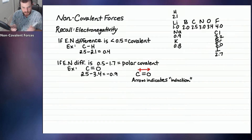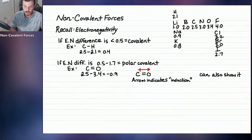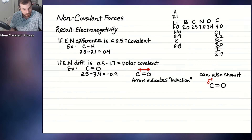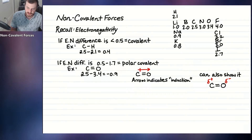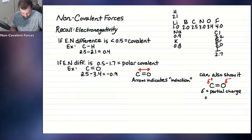The oxygen is more electronegative, so it's pulling more electron density away from the carbon. Another convention to show induction is using partial charges. On the carbon-oxygen bond, we put a delta plus on the carbon and a delta minus on the oxygen to show the partial negative charge. This delta symbol equals partial charge, and that partial charge is due to induction.